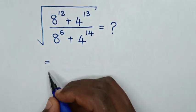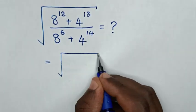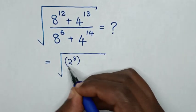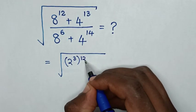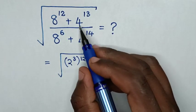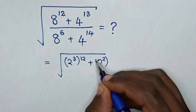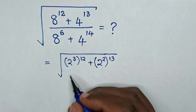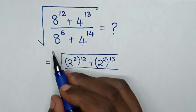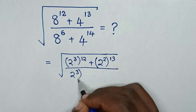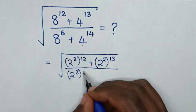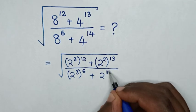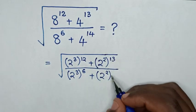So this is equal to square root of: 8 is the same as 2 power 3, bracket power of 12, plus 4 is the same as 2 power 2, bracket power of 13, over 8 is 2 power 3, bracket power of 6, plus 4 is 2 power 2, bracket power of 14.